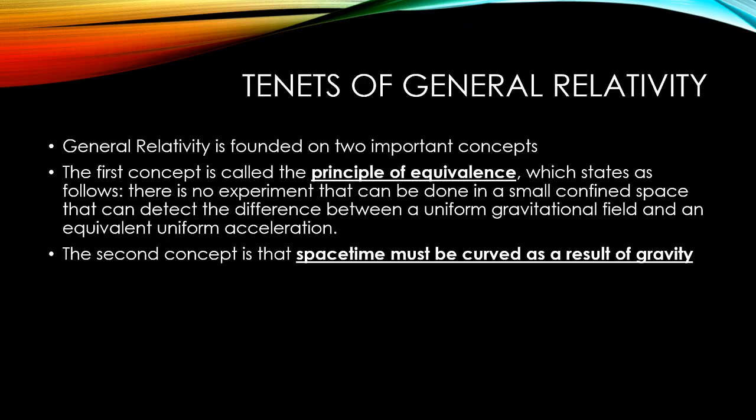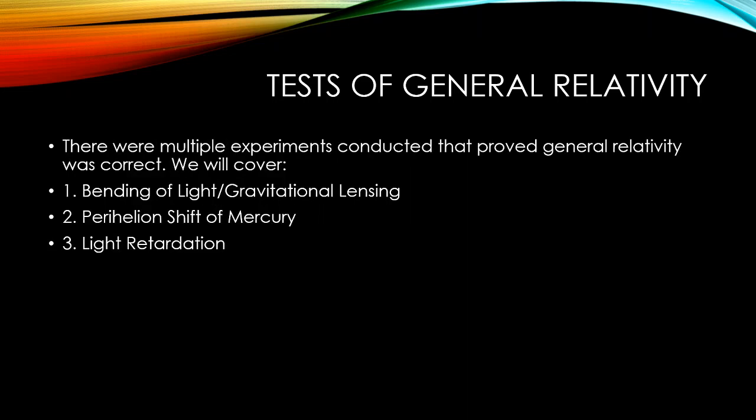The tenets of general relativity are founded on two important concepts. The first is the principle of equivalence, which states: there is no experiment that can be done in a small confined space that can detect the difference between a uniform gravitational field and an equivalent uniform acceleration. The second concept is that space-time must be curved as a result of gravity.